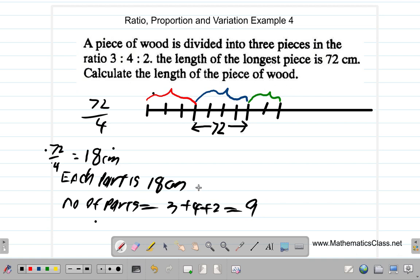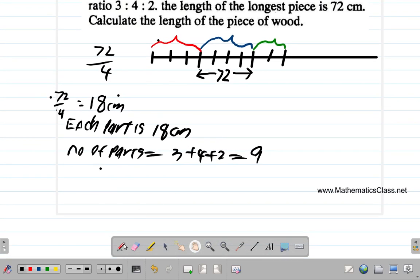Now, since you have 18 centimeters each and you have 9 of them, then total length is equal to 18 times 9.